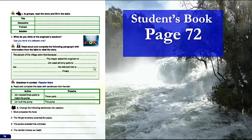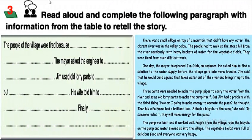Now, my dear students, let's move to your student's book page 72, exercise number three. Read aloud and complete the following paragraph with information from the table to retell the story. Read the story again carefully and try to complete the paragraph.